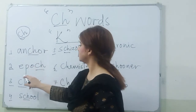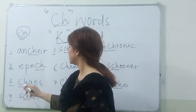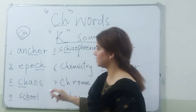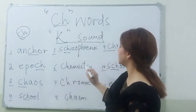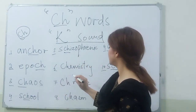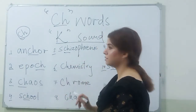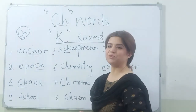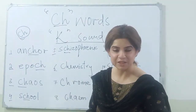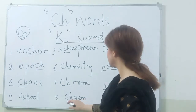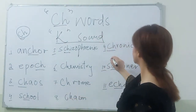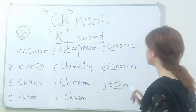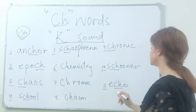So here the words with old Greek influence are pronounced with a K sound: anchor, epoch, chaos, school, schizophrenic, chemistry, chrome, schooner, echo.